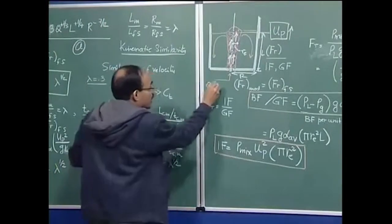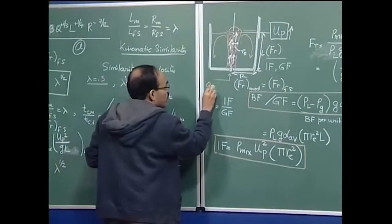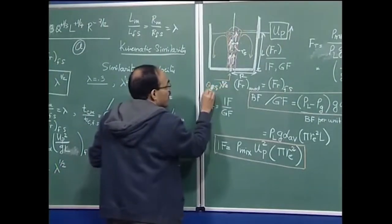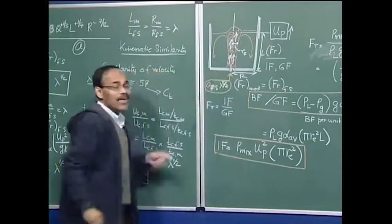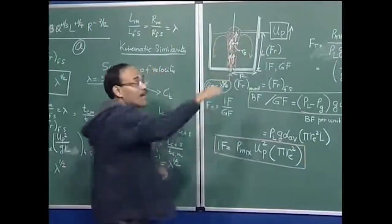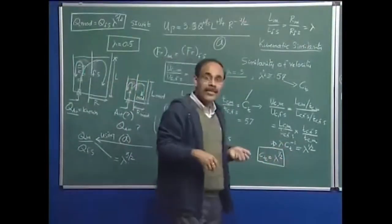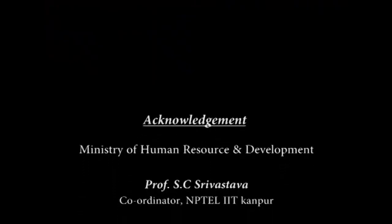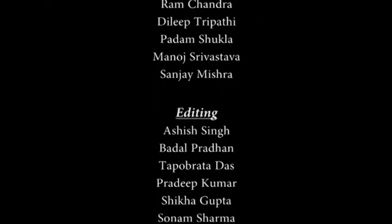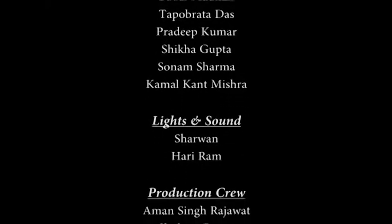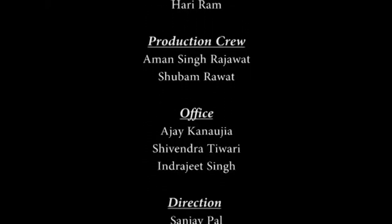The final flow rate scaling equation is: Q_model = Q_fullscale × λ^(5/2). So if the scale factor λ = 0.3 and λ^(5/2) ≈ 0.1, and the full-scale flow rate is 100 m³/s, then the model flow rate would be 10 m³/s. Corresponding to the full-scale flow rate and chosen scale factor, you get the model flow rate, and with that model flow rate you ensure dynamic similarity between the two systems. Thank you.